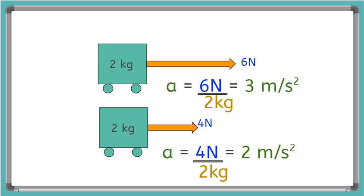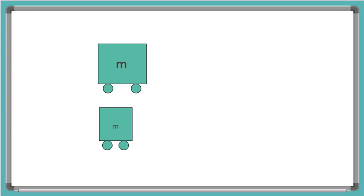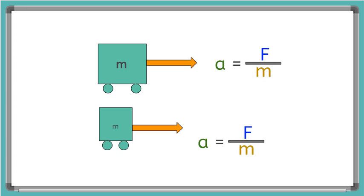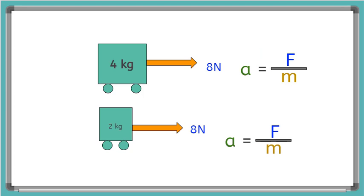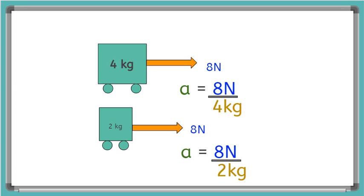This helps us understand that when two objects have the same mass, the object with the larger force will have a faster acceleration. Now what about carts with different masses pulled with the same force? If the same force is pulling both carts, the heavier cart will accelerate slower than the lighter cart. Let's use numbers: the top cart is 4 kilograms, the bottom cart is 2 kilograms, and both are pulled with 8 newtons.